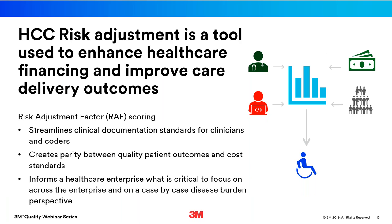Risk adjustment is a tool to ensure fair payment. Consider two patients with the same gender and age — one with a clean bill of health and the other with multiple chronic illnesses. Both have their own healthcare providers. If payments are purely determined by age and gender, both providers receive the same payment, even though treating the sicker patient is more complex and costly. The provider treating the sicker patient would be underfunded, and the provider treating the healthy patient overpaid. HCCs address this disparity by accounting for the difference in illness burden.